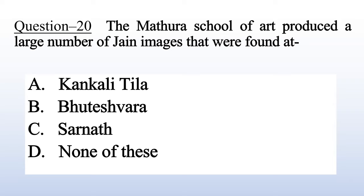Question 24: The Mathura school of art produced a large number of Jain images that were found at — A. Kankali Tila, B. Bhuteshvara, C. Shakana, D. None of these. Answer is A: Kankali Tila.